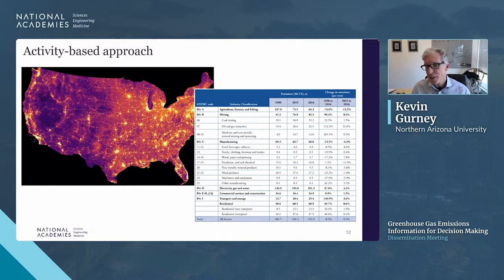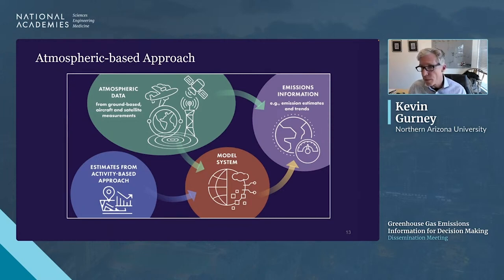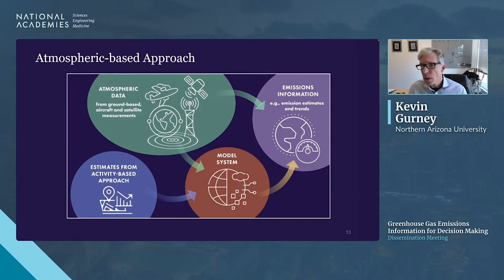Atmospheric-based approaches use atmospheric measurements directly in mass-balance approaches to estimate fluxes, or use atmospheric transport model systems — the inverse approach — which takes atmospheric data combined with an activity-based estimate and uses transport modeling to work backwards from an atmospheric measurement to best estimate the surface flux. This Bayesian setup, using prior and posterior estimates, has been used for three decades and is increasingly performed at finer scales.